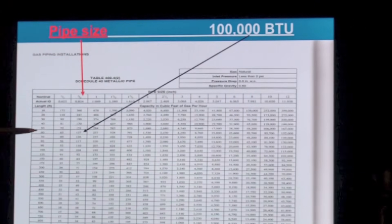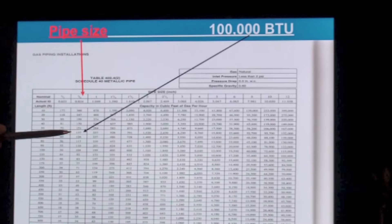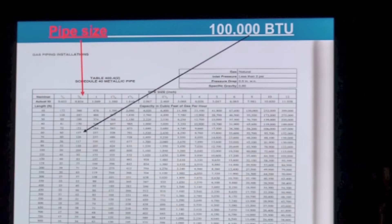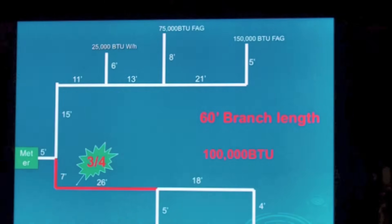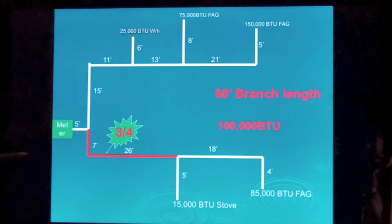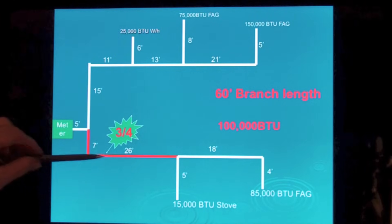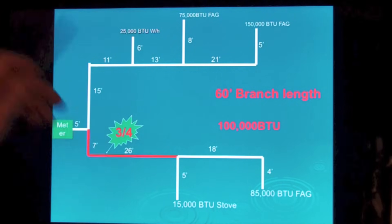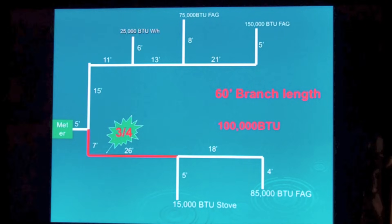60 foot length, 100,000 BTUs. Three quarter will do 137, but half inch will only do 65. So you're going to be three quarter. That's a three quarter inch piece of pipe right here.